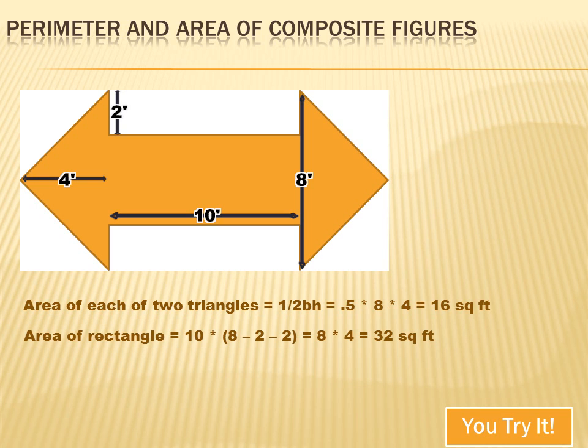How about the rectangle? Well, it's obvious that that dimension is 10 feet, but what's this dimension? It doesn't tell us any place. Well, we have to figure that out. We know that from there to there is 8 feet, and we know that from there to there is 2 feet, and we can assume that that's 2 feet. So I've got 8 feet less 2 feet less 2 feet. That dimension is 4 feet.